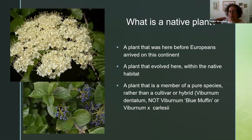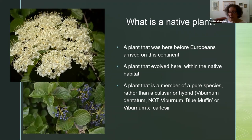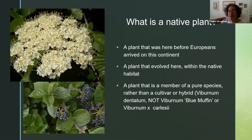What is a native plant? Very quickly: a native plant is a plant that was here before Europeans arrived on this continent — before 1492 — a plant that evolved here within the native habitat. It means it has defenses against all of our insects, because plants and insects have been in a pitched battle for about 300 million years. It's also a plant that's a member of a pure species. I strongly suggest you plant pure species rather than cultivars or hybrids.